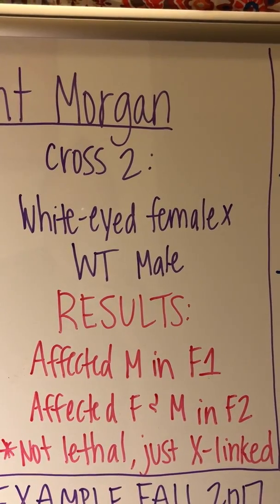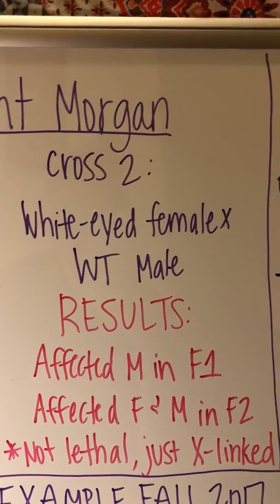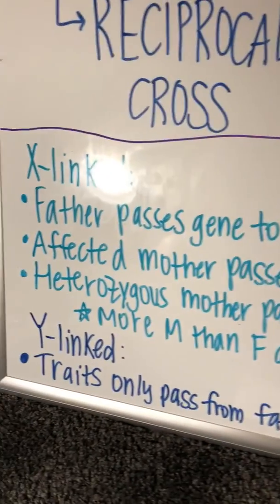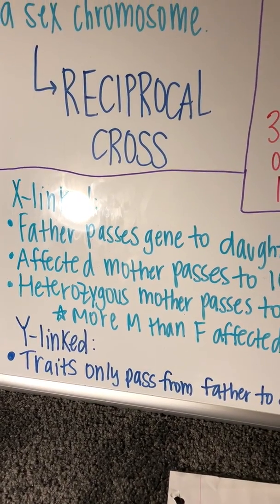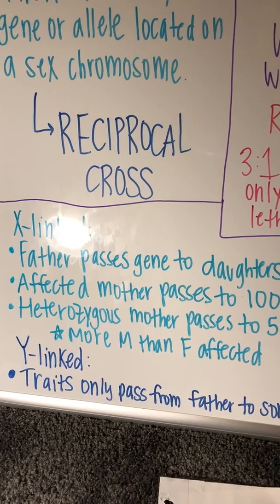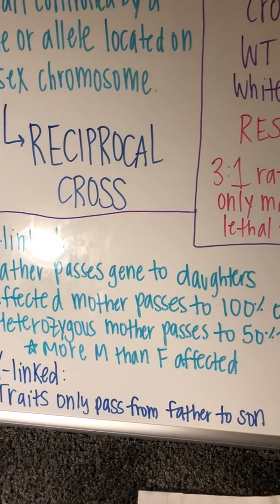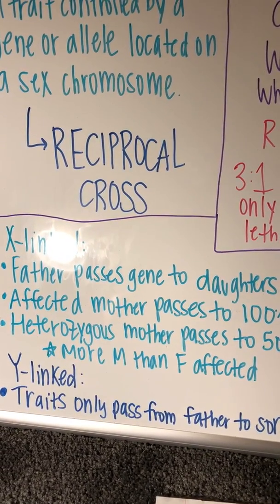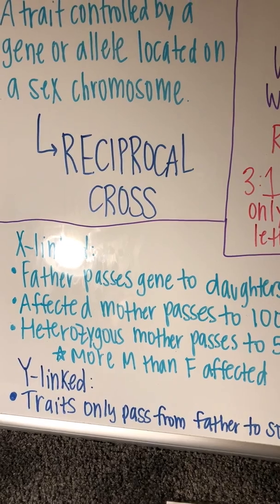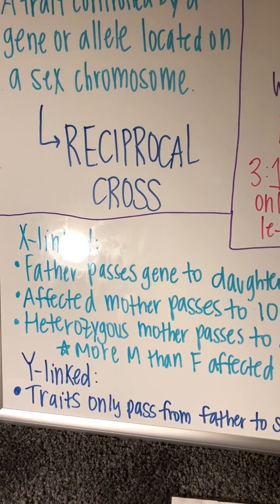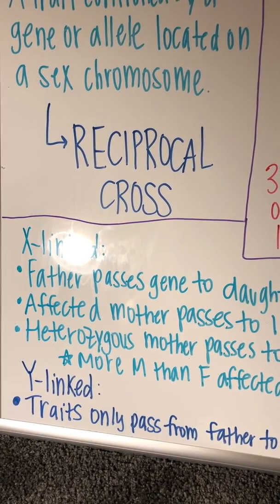Because there was an affected male in F1, he had to have gotten his X chromosome from the female, which means the trait is X-linked. Making some generalizations: if a trait is X-linked, it will not pass from father to son. A father can only pass the gene to his daughters. An affected female will pass it to 100% of her sons, while a heterozygous mother passes it to 50% of her sons. There are more males than females affected because males only have one X chromosome, so any recessive allele they inherit will be expressed, and X-linked traits often skip generations.